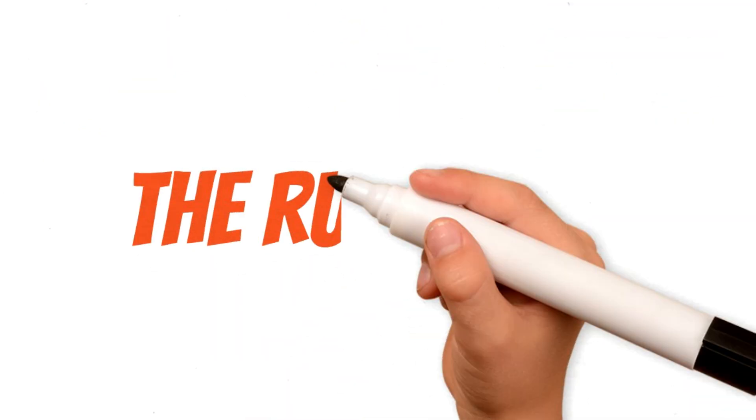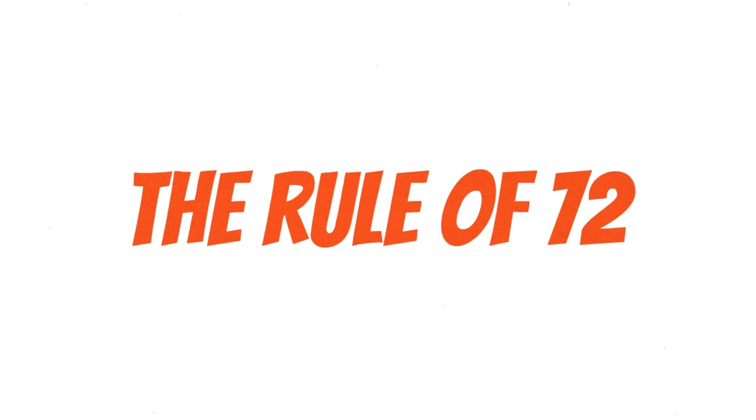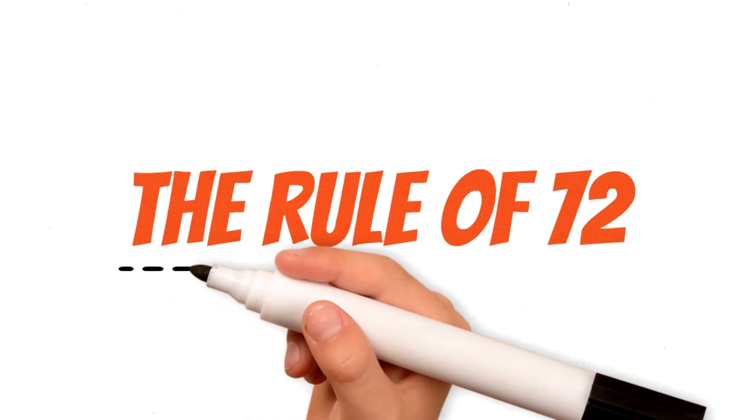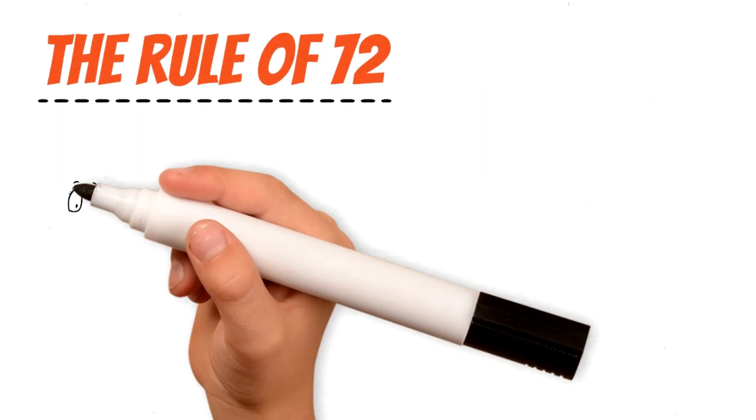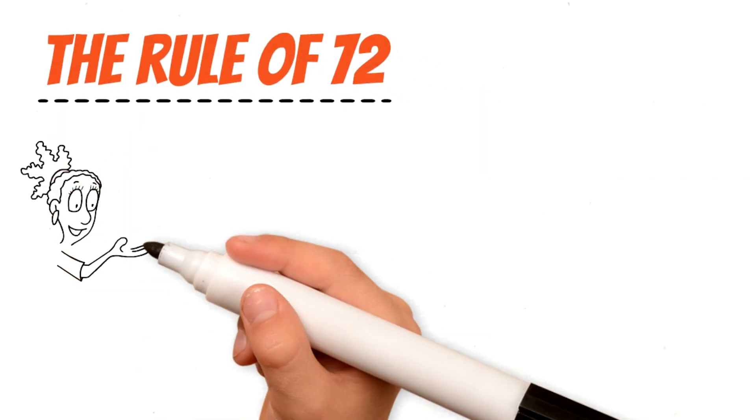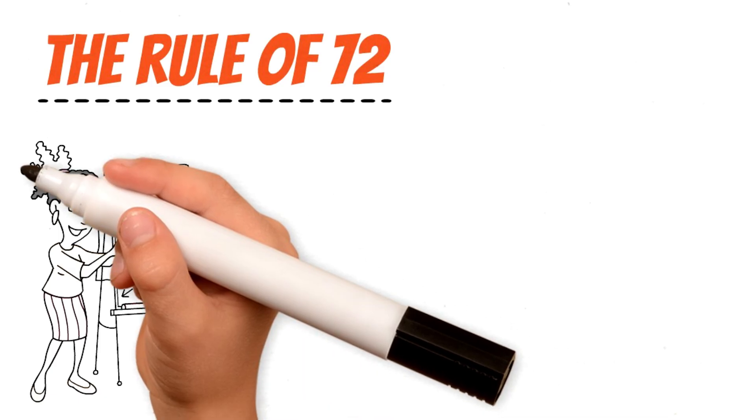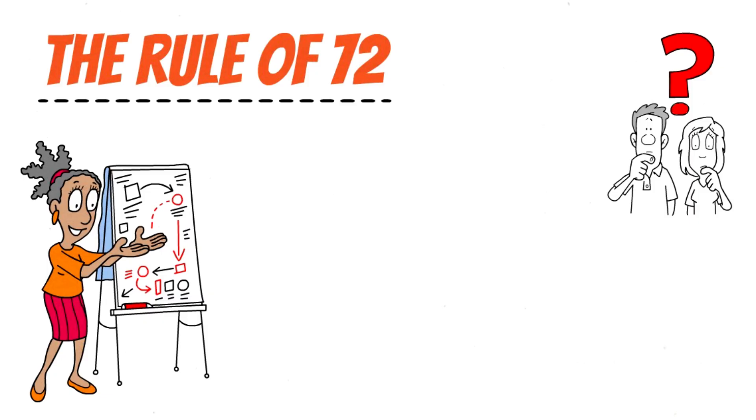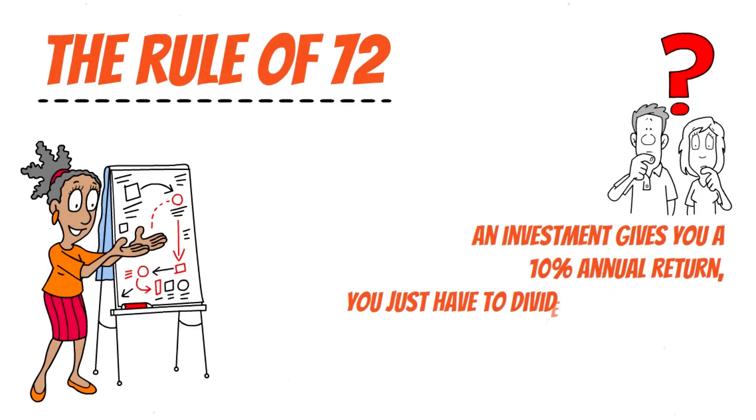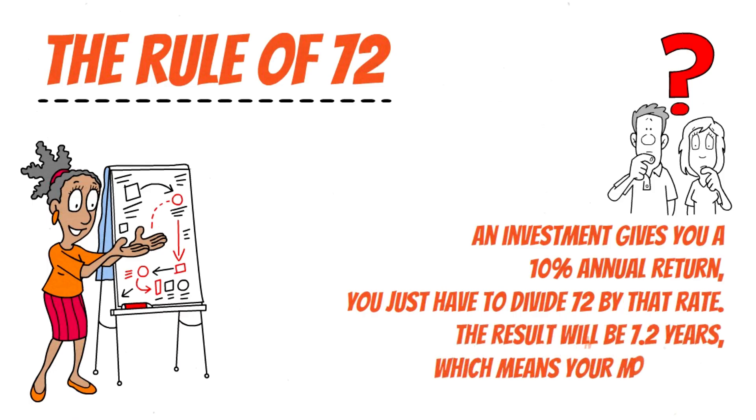The key concept I want you to understand is the rule of 72. Its name is simple, but its impact is monumental. This rule is an incredibly simple mathematical formula that tells you how many years it will take for your investment to double based on the interest rate you are receiving. If you know that an investment gives you a 10% annual return, you just have to divide 72 by that rate. The result will be 7.2 years, which means your money will double in that time.